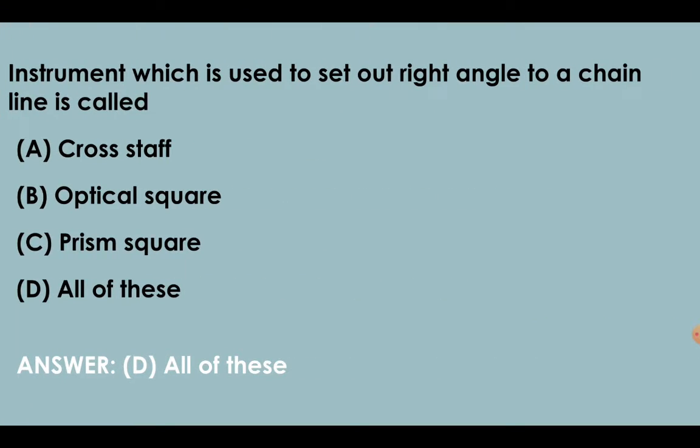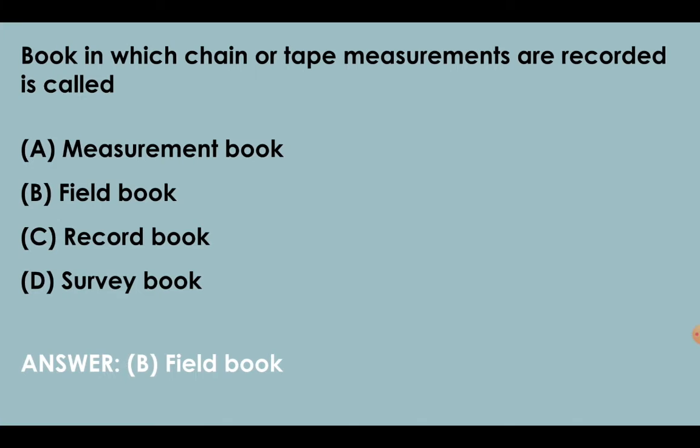Instrument which is used to set out right angle to a chain line is called cross staff. Optical square can be used, and prism square can also be used. Book in which chain or tape measurements are recorded is called field book.